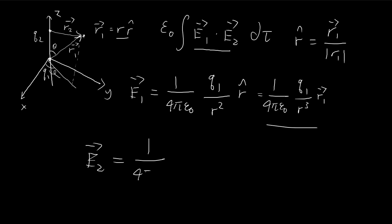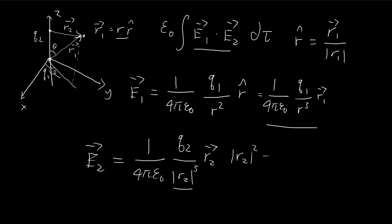For E2 we get something similar: q2 divided by the magnitude of r2. Instead of squaring I'll raise to the power of 3 and use the full vector rather than a unit vector — this is equivalent. To evaluate this we need to find the magnitude of r2, and we can use the cosine law: |r2|² equals l² plus r² minus 2lr cosine theta, where l is the distance between the two charges.